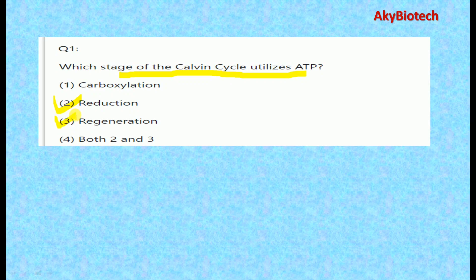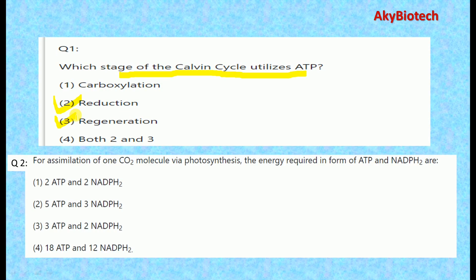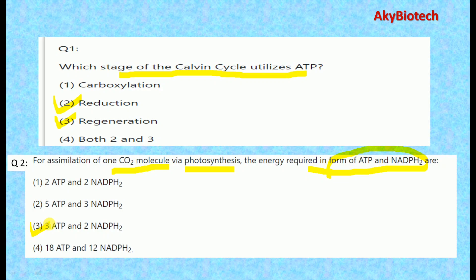Question two: For the assimilation of one carbon dioxide molecule via photosynthesis, the energy required in the form of ATP and NADPH — the correct option is three ATP and two NADPH molecules.